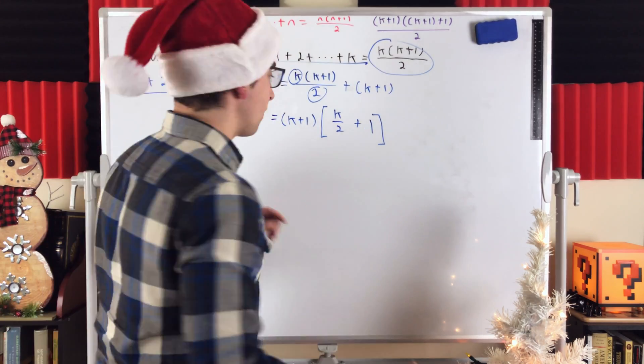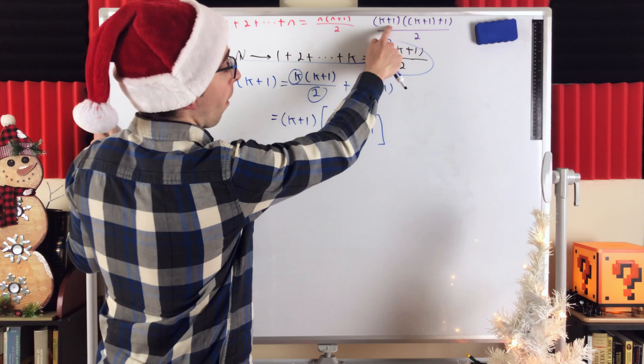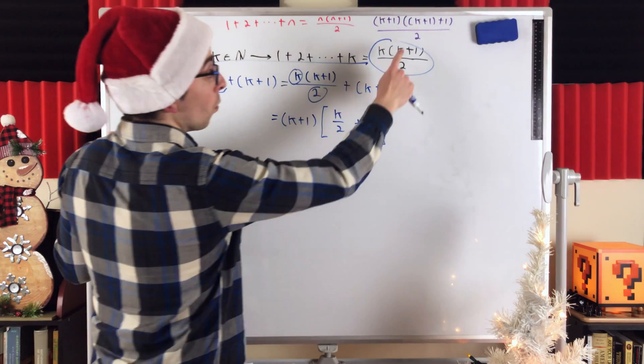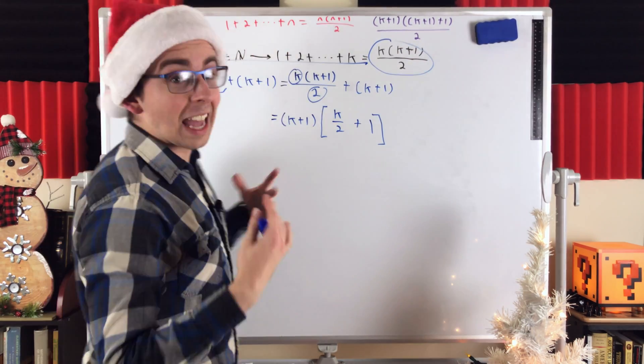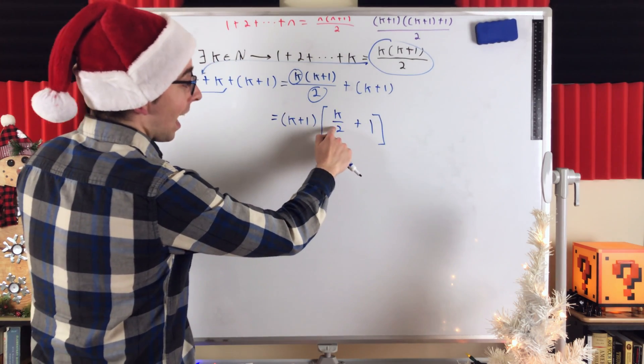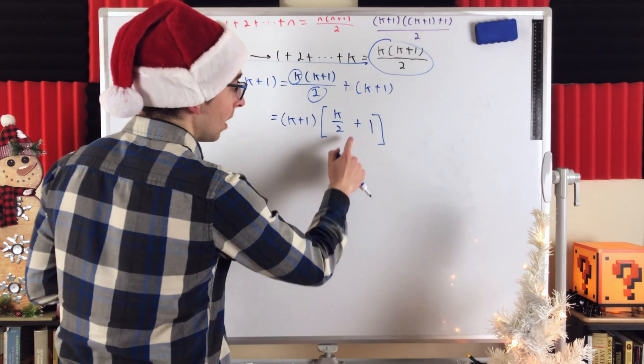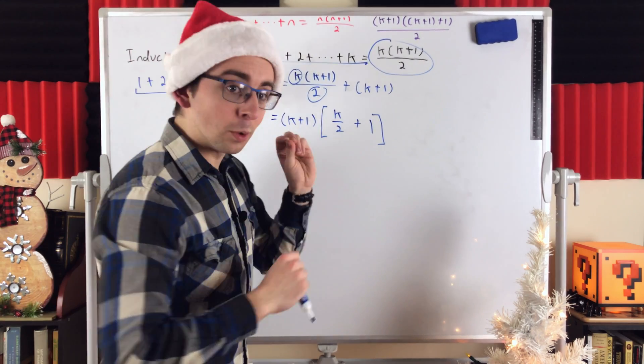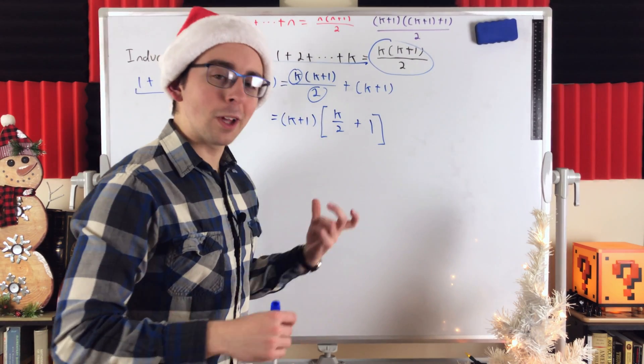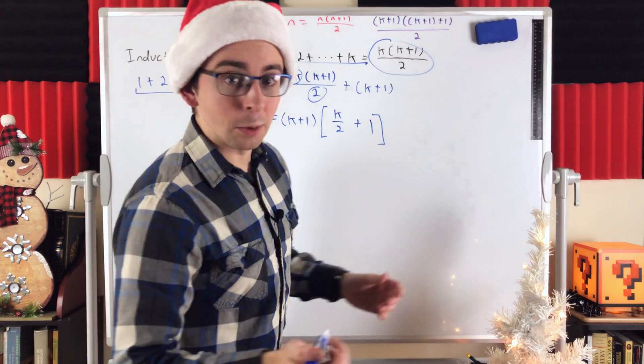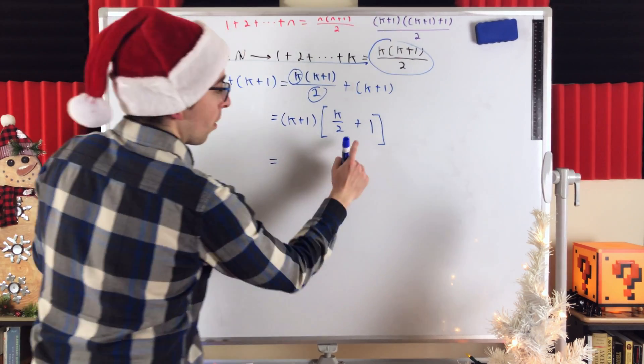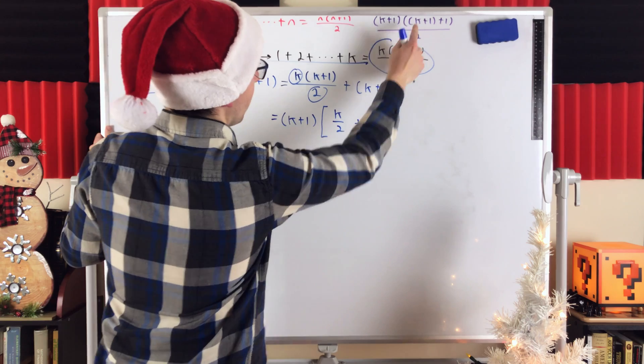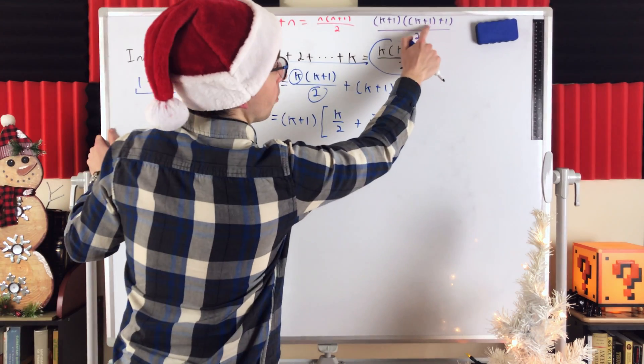All right, now we're getting pretty close. We see we've got a factor of k plus 1, which is part of our final expression. So, we're getting warmer there. Now, what about this? Well, we want another factor of k plus 1 plus 1, which is k plus 2. What we've got here is k over 2, which is half of k, plus 1, which is half of 2. So, if we just factor out a 1 half out of this expression, well, for starters, we'll get k plus 2, which is what we want, but then we'll also have a factor of 1 half, which is also what we want, and that will complete the proof. So, let's see that in action. We're going to factor out 1 half out of this. Again, that's going to turn this into k and this into 2, which is what we want. Alright, so let's just do it.